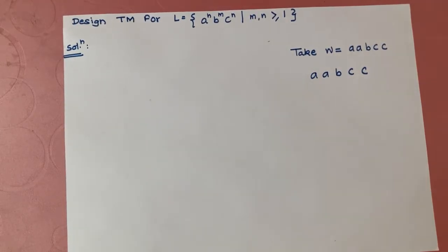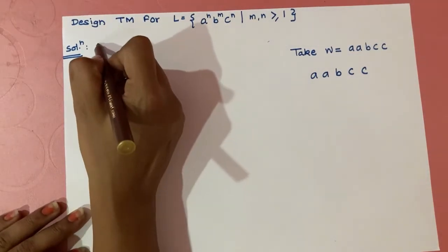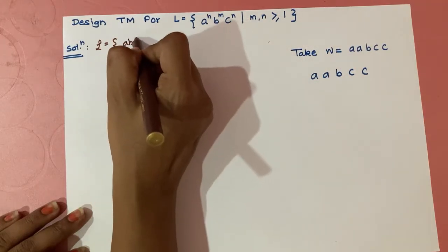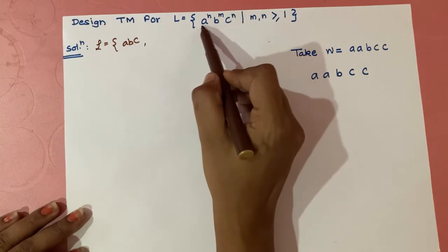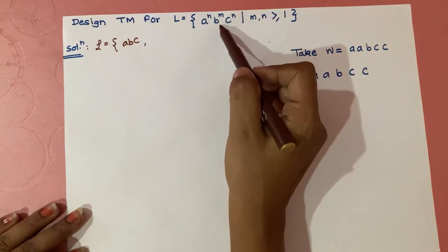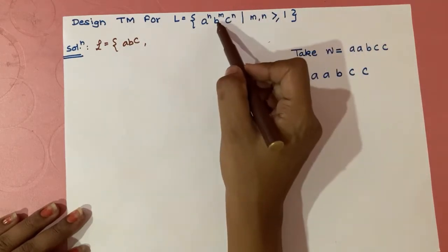Hello friends, welcome back to the channel 'Learn with Art.' The next example for designing a Turing machine: we have taken the language L = a^n b^m c^n, where the values of m and n are greater than or equal to 1. We will start to analyze this language. The key observation is that we have to match the number of a's with the number of c's — we don't need to bother about the number of b's, because the power of a equals the power of c.